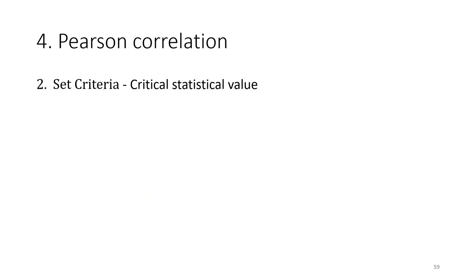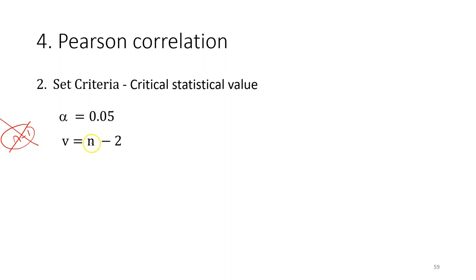The next step is to set the criteria. The way we set the criteria is slightly different from the t-test, although we refer to the same table. First, we need to determine our alpha — in most examples we use alpha equals 0.05. The degree of freedom for Pearson correlation is no longer n-1 as in the t-test. For Pearson correlation, the degree of freedom is n-2, because there are two variables involved in the test.